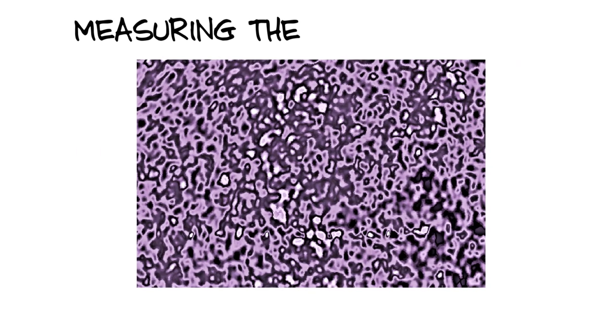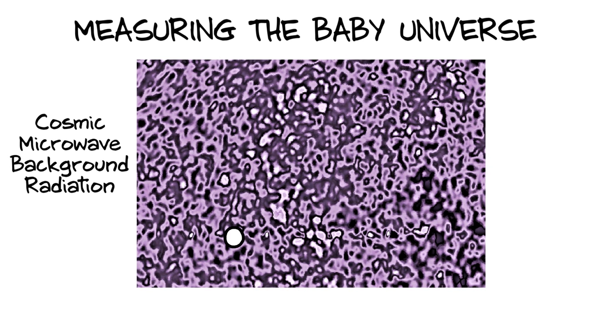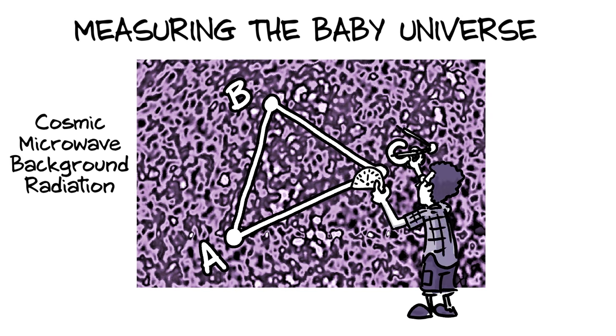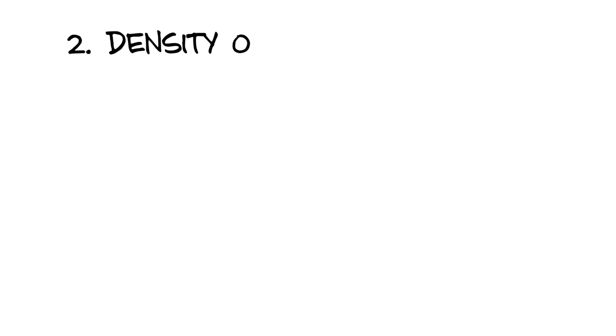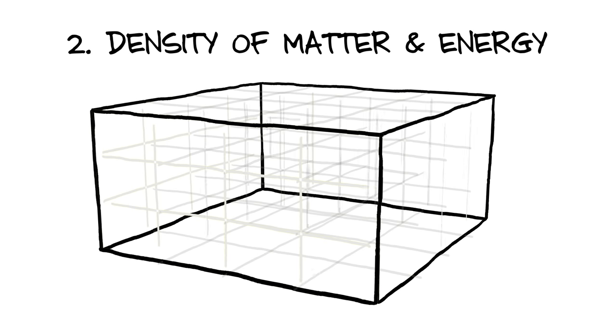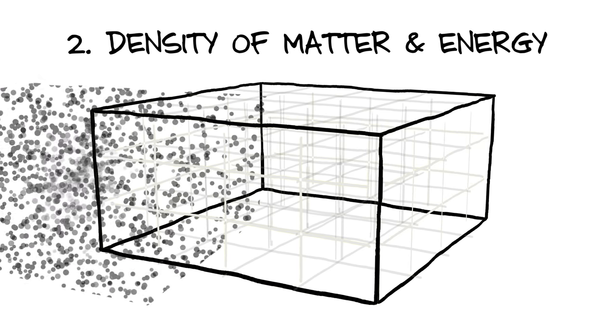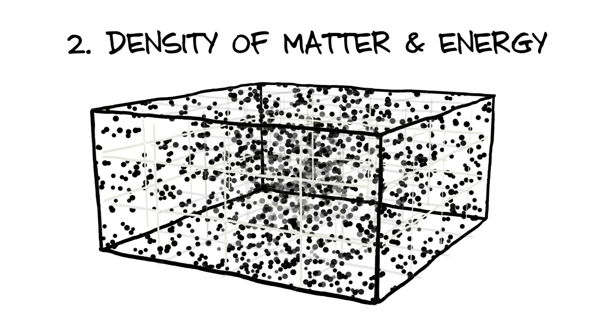Cosmologists have done the equivalent of measuring our universe's triangles by looking at a picture of the early universe and studying the spatial relationship between different points on that picture. The second way to measure curvature is to measure the thing that causes space to curve in the first place: the density of energy and matter throughout the universe, which cosmologists have also measured.